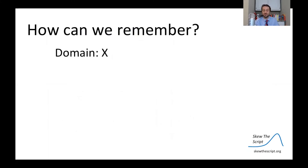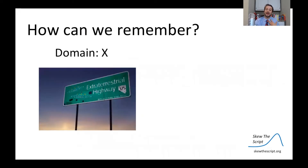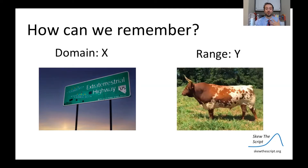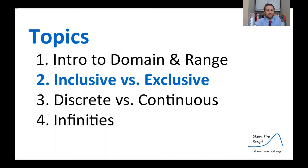A good way to remember which is which: domain goes with x, and range goes with y. The way I like to think of it — domain x sounds like a cool name, like Area 51 or something, so think of aliens and domain x. Whereas range and y, if you combine them, it kind of sounds like 'rangy' — like a steer or cattle, something on the range. It's a quirky way to remember, but it's always helped me.